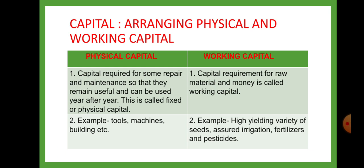Working capital: Capital required for raw material and money is called working capital. It is very essential for the production to be carried on. Without it we cannot do production of farm activities. Examples include seeds, fertilizers, pesticides — such as high yielding variety of seeds, assured irrigation, fertilizers and pesticides.